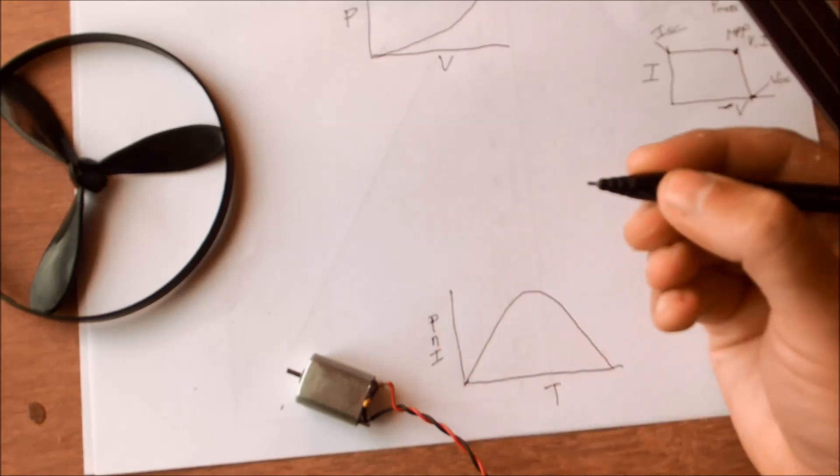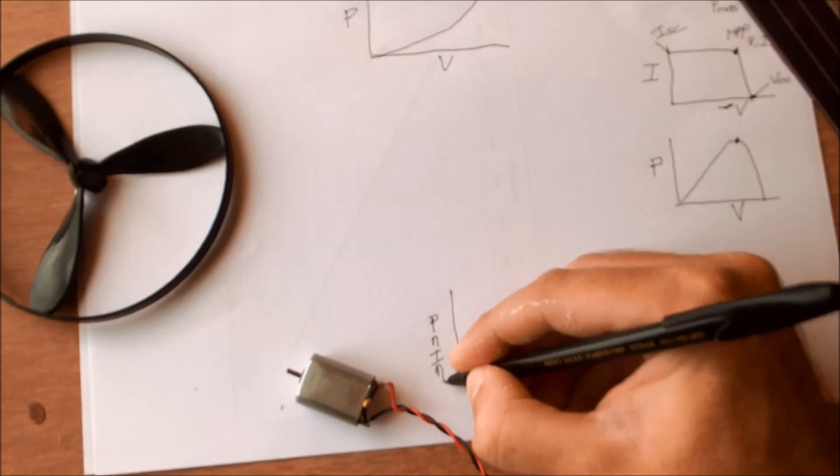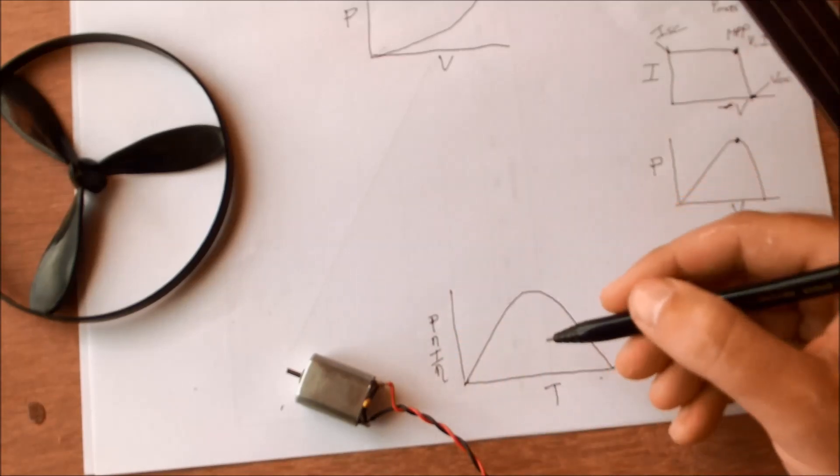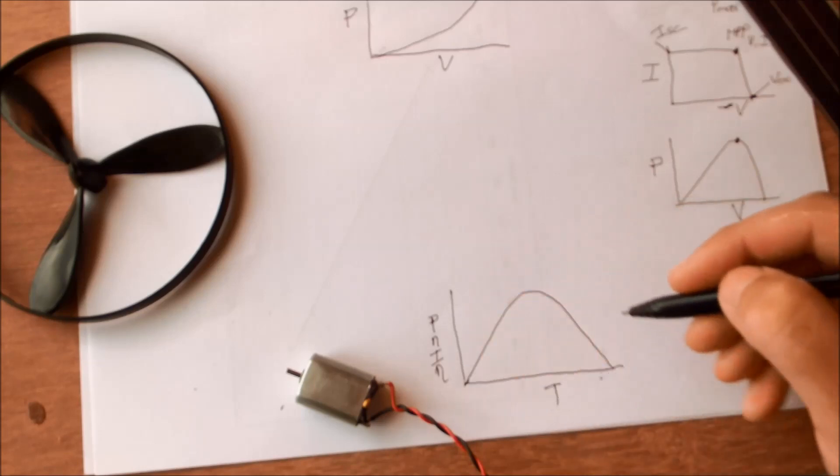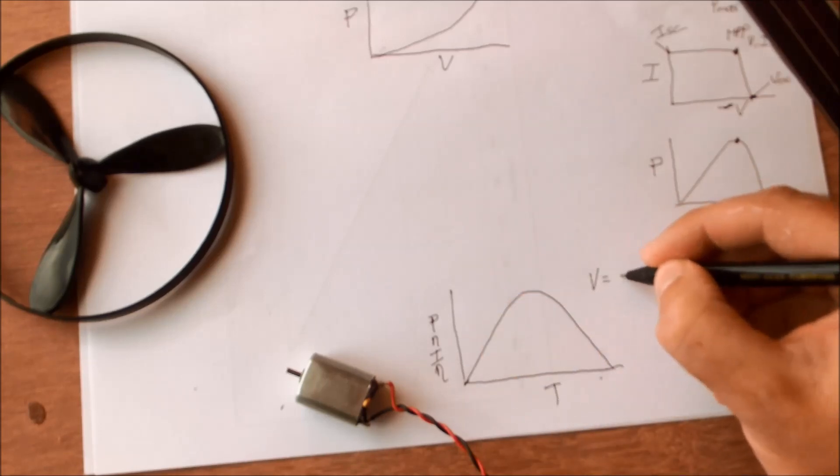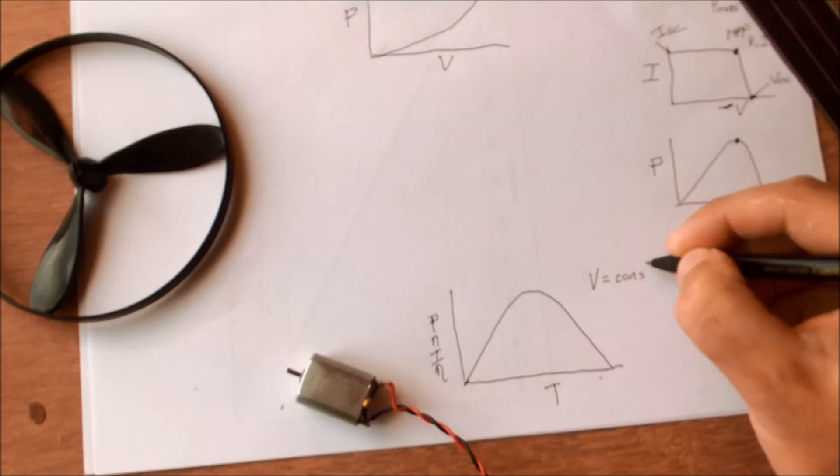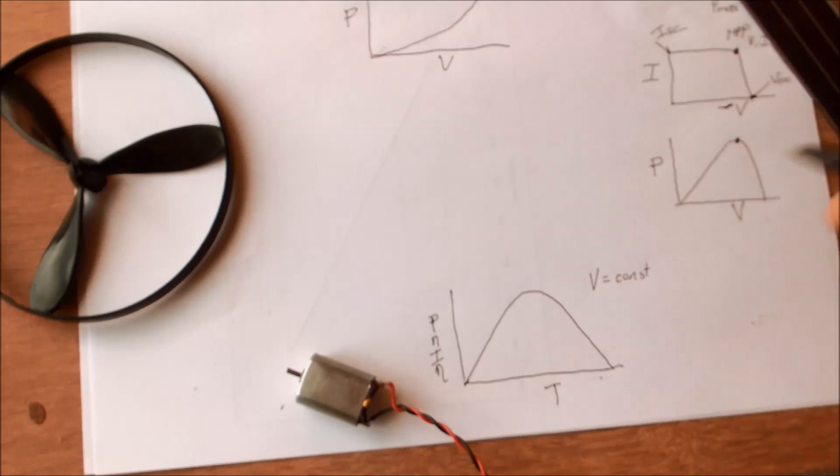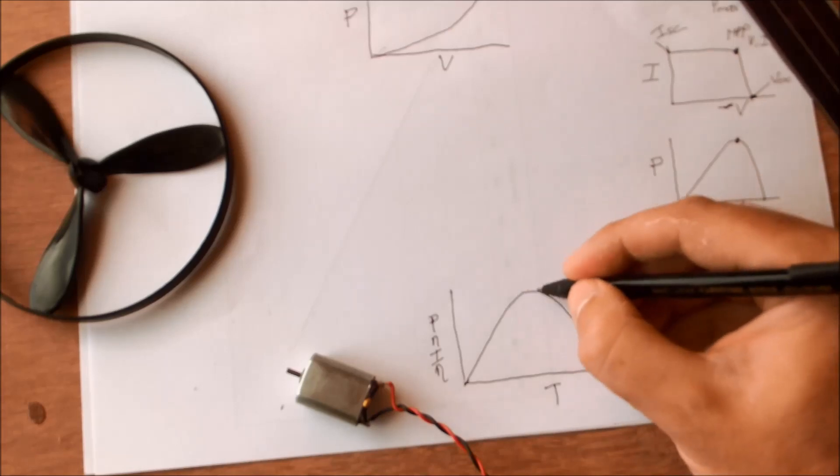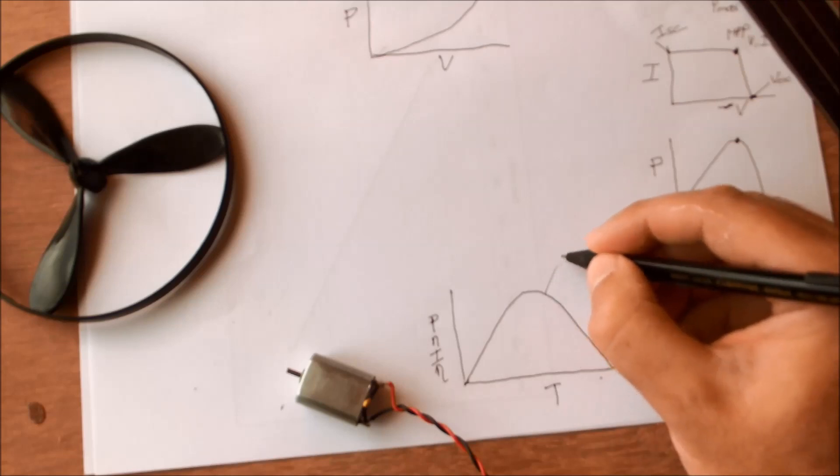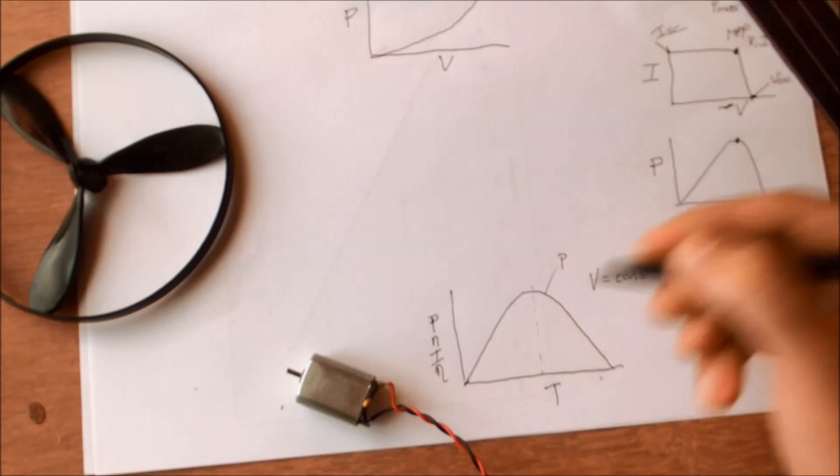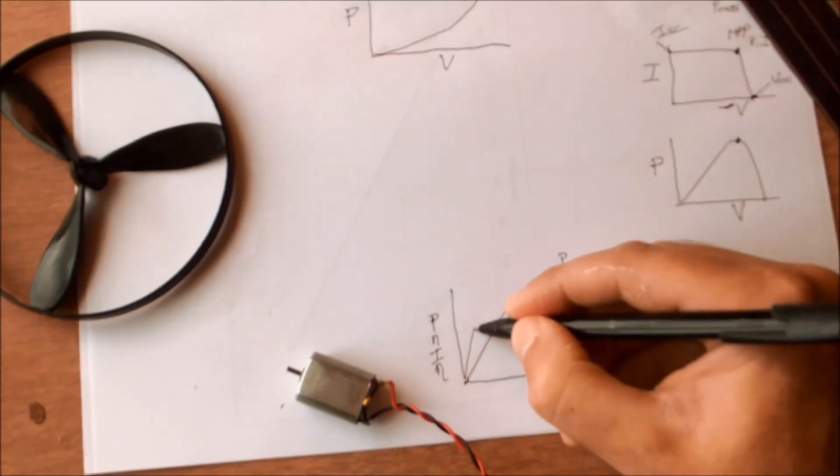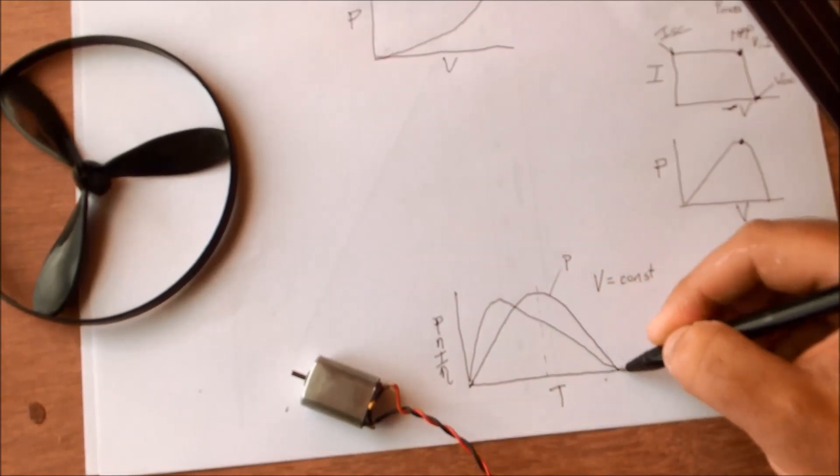...current and efficiency all on the y-axis. These graphs would typically be for a constant voltage and with power giving you a very symmetrical graph and you would have efficiency that looks something like that.